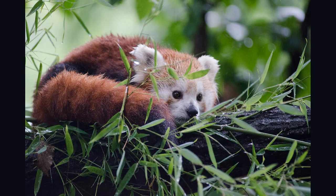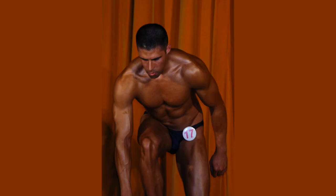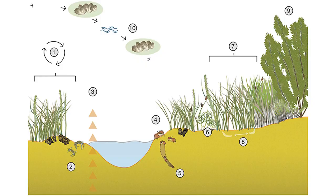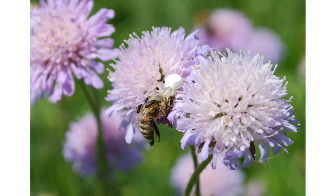Competition is an interaction in which two or more species compete for the same resources, such as food, water, or territory. The video shows examples of competition between living organisms, such as lions fighting over a kill, plants competing for sunlight, and birds fighting over nesting sites. Understanding the interactions between living organisms is crucial for studying ecology, as it helps us understand how they interact with each other and their environment.